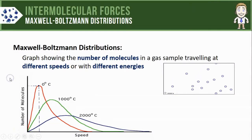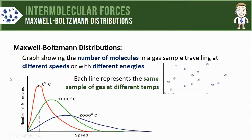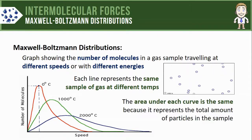You might have also noticed that there's actually three different lines on this one graph. Each of the lines here is representing the same sample of gas at different temperatures. The area under each curve is going to be exactly the same because that area represents the total amount of particles in the sample, and this is the same sample of gas just at three different temperatures.